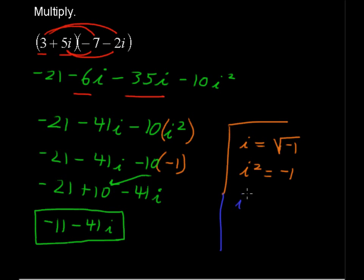this i to the third then would equal i squared multiplied by i to the first. Right? So, i squared is negative 1. So negative 1 times i, or negative i.